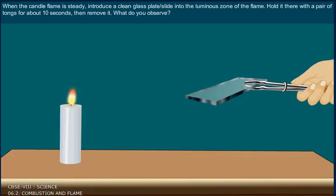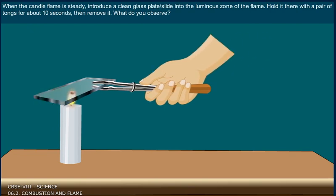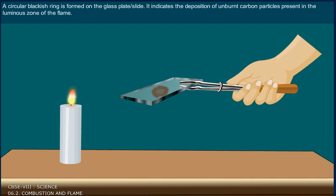When a candle's flame is steady, introduce a clean glass plate or slide into the luminous zone of the flame. Hold it there with a pair of tongs for about 10 seconds. A circular blackish ring is formed on the glass plate or slide, indicating the deposition of unburned carbon particles present in the luminous zone of the flame.